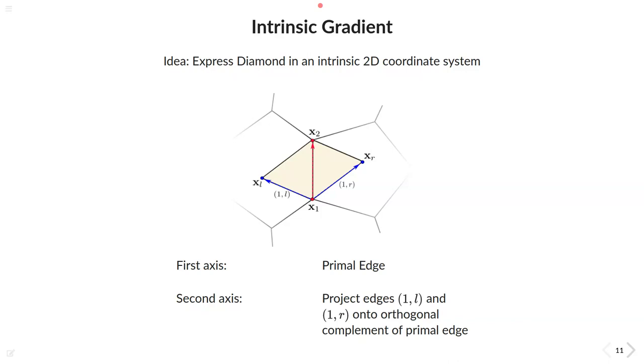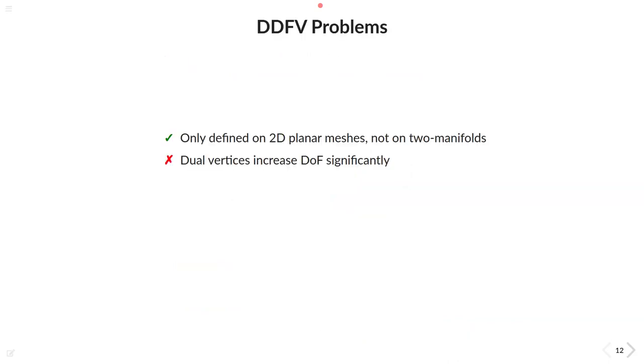And as coordinate axes, we start with the normalized primal edge, once again the red one, and project the blue edges 1L and 1R onto the orthogonal complement of the primal edge. Because this ensures the orthogonality of the second axis and that it lies within the plane spanned by both of these triangles. Having solved problem 1, now onto problem 2.